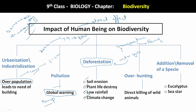Next comes overhunting — direct killing of wild animals. We are killing animals: elephants for the sake of their ivory teeth, wild animals for various reasons. We are overhunting them, and this is drastically reducing wildlife populations.